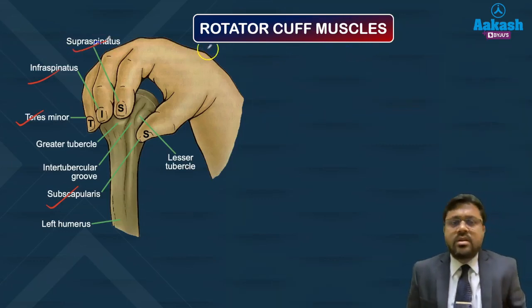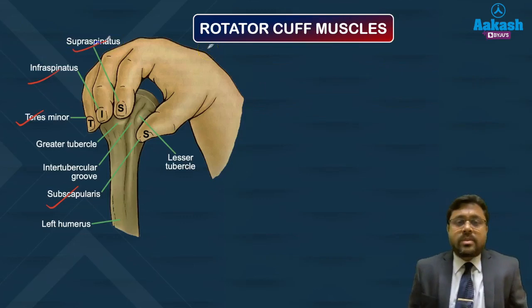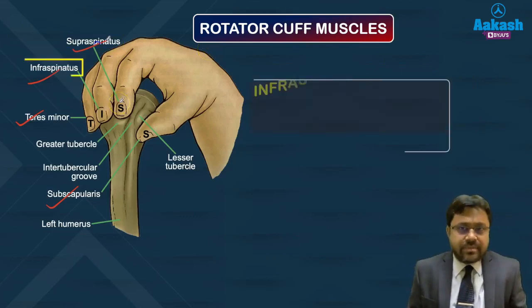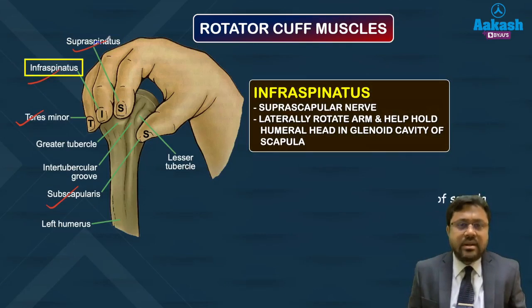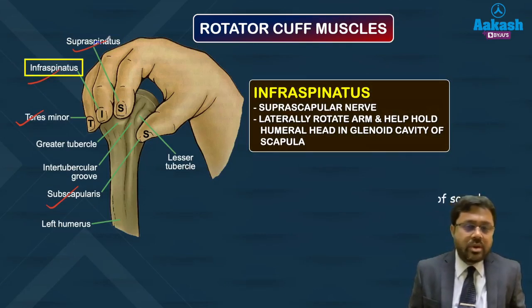The infraspinatus muscle is also supplied by the suprascapular nerve. Its action is lateral rotation of the arm, and it helps hold the humeral head in the glenoid cavity of the scapula.